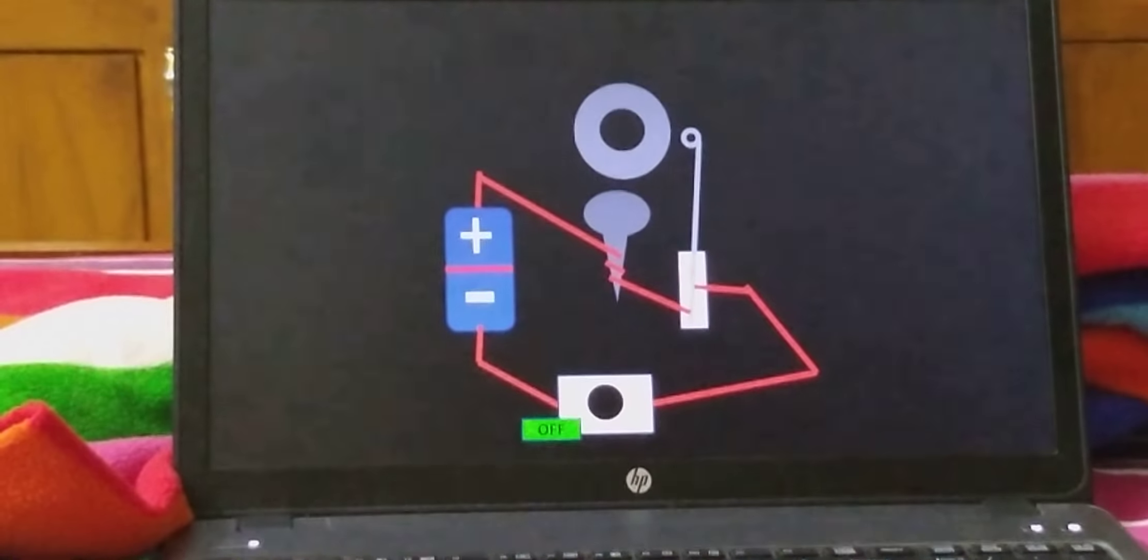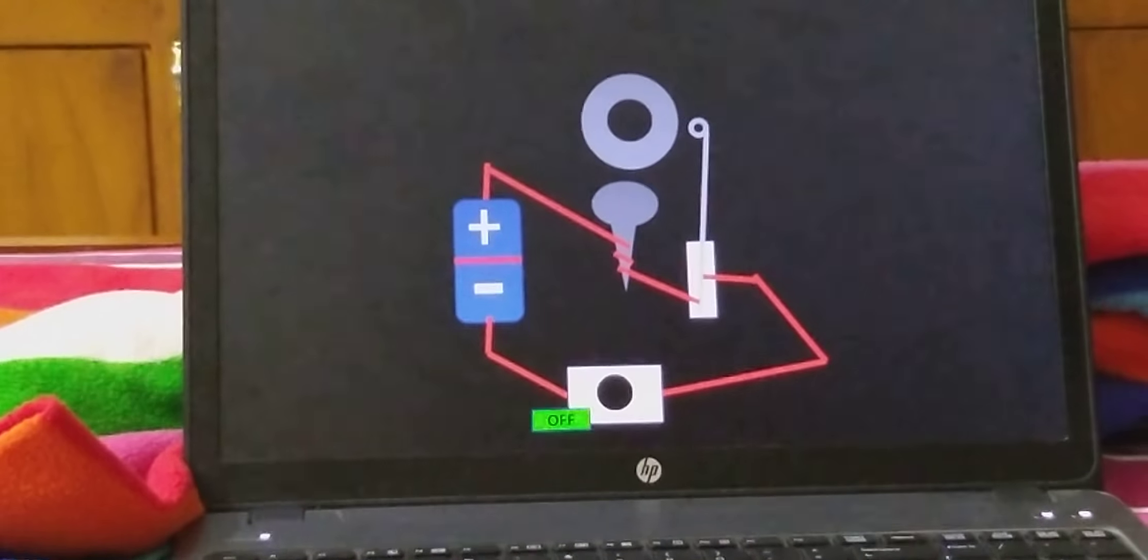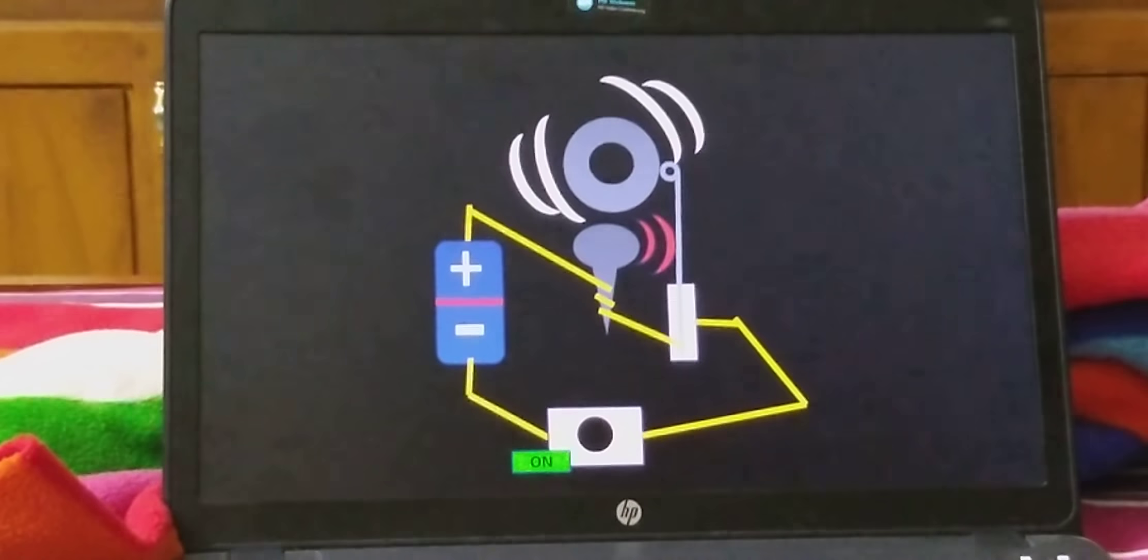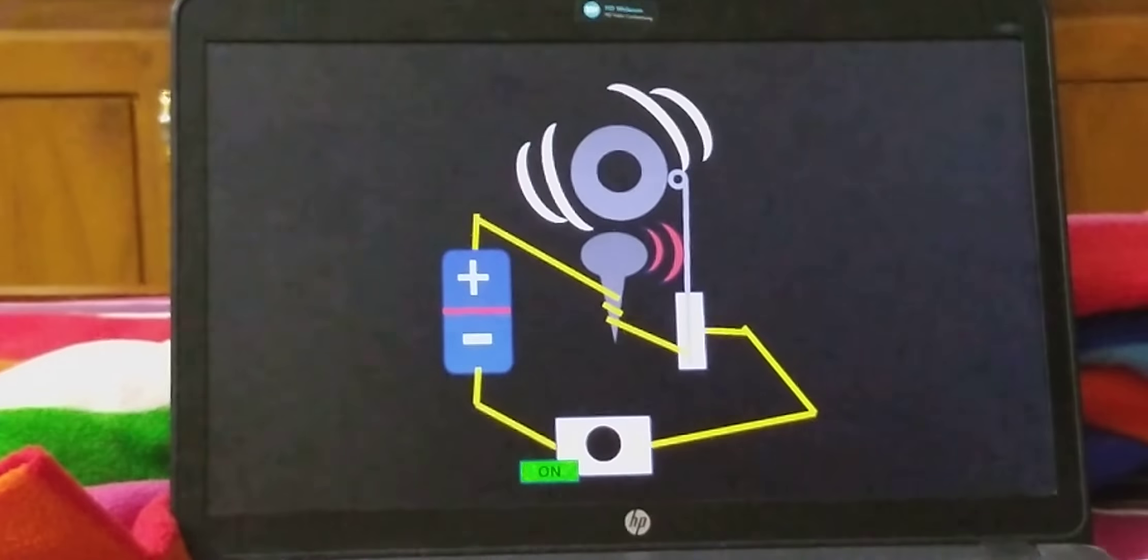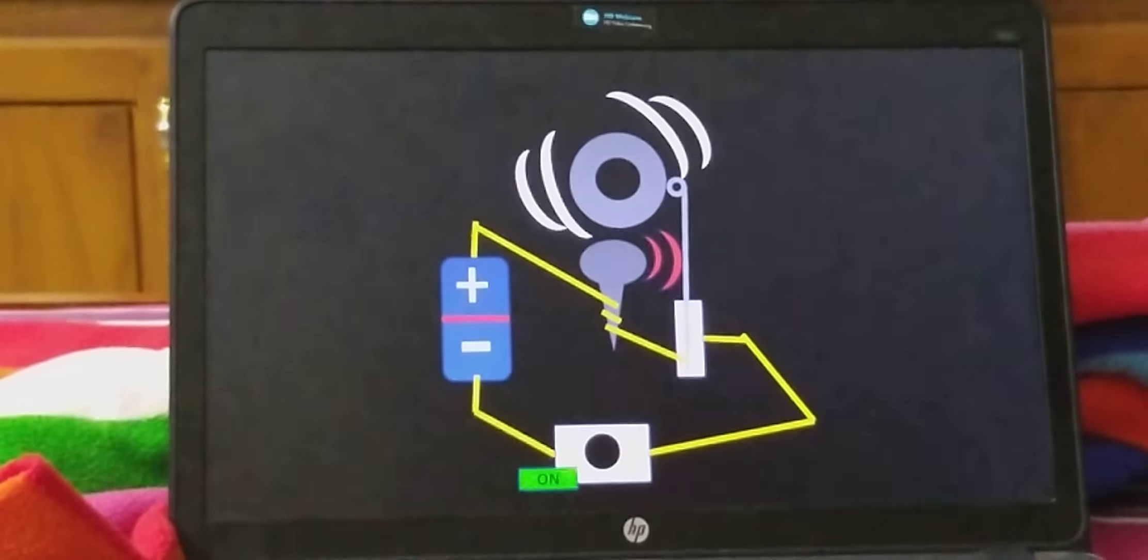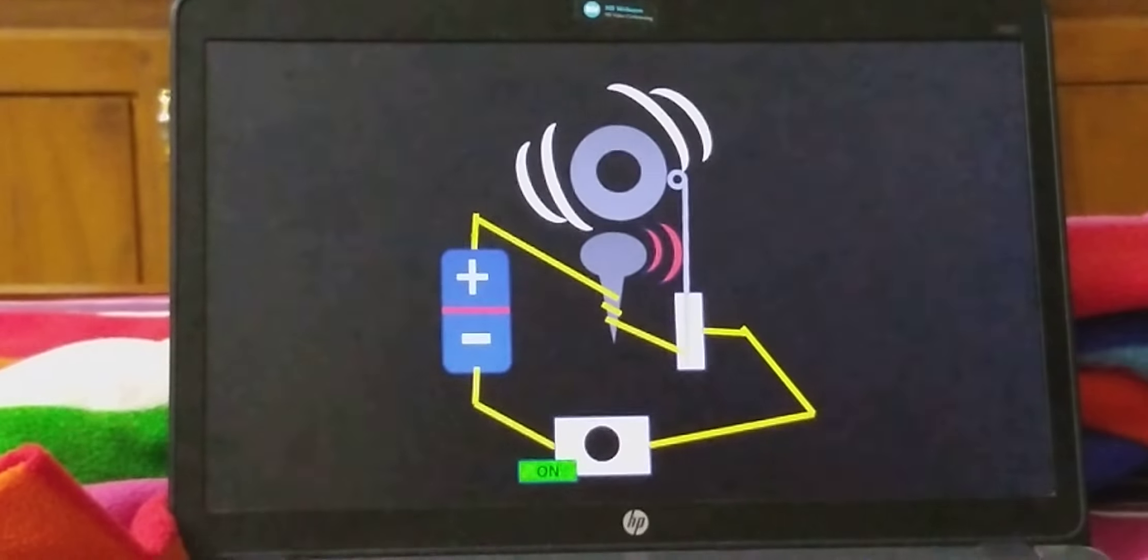Now the switch is off so the circuit is not complete. When the switch is on the circuit gets completed and the coil attracts the clapper.